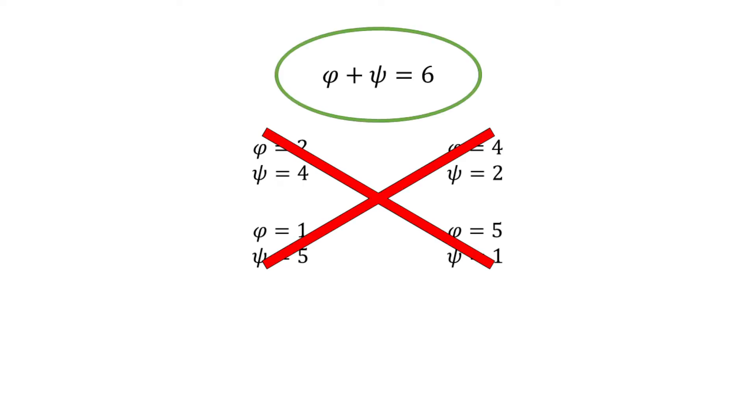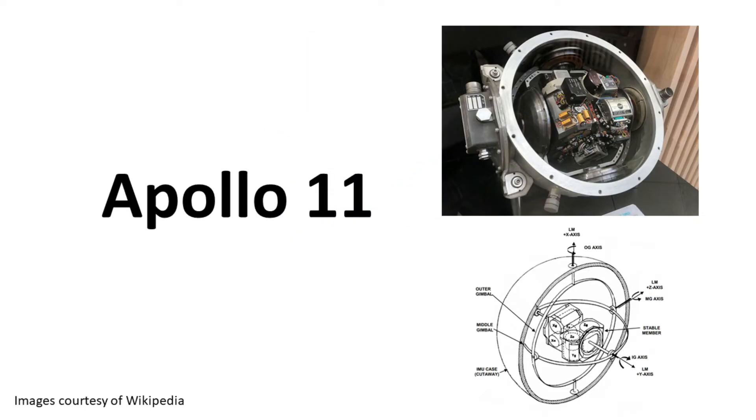And this isn't just a funny quirk with math. It actually affects real life. Notably, the Apollo missions had a gimbal used to measure the orientation of the control module.